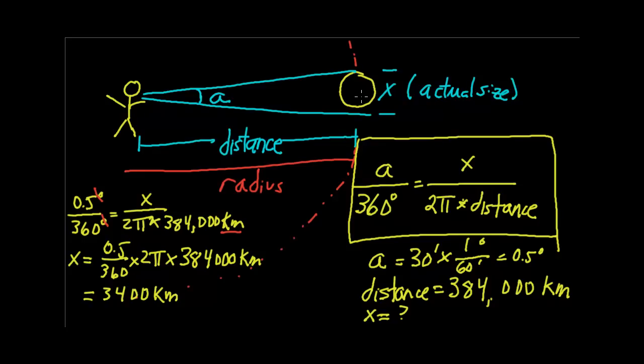If we wanted to do the same calculation, let's say for the sun, it turns out that the sun takes up about the same amount of space in the sky, about half a degree, but the difference is the distance to the sun.